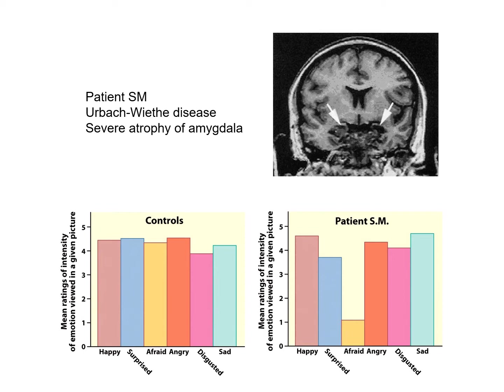Urbach-Wiethe disease causes severe atrophy of the amygdala. Patient SM is largely normal when it comes to intelligence and so forth, but there is one aspect that is very abnormal when it comes to her emotional processing: she was not able to assess the severity or intensity of the emotion she was viewing.